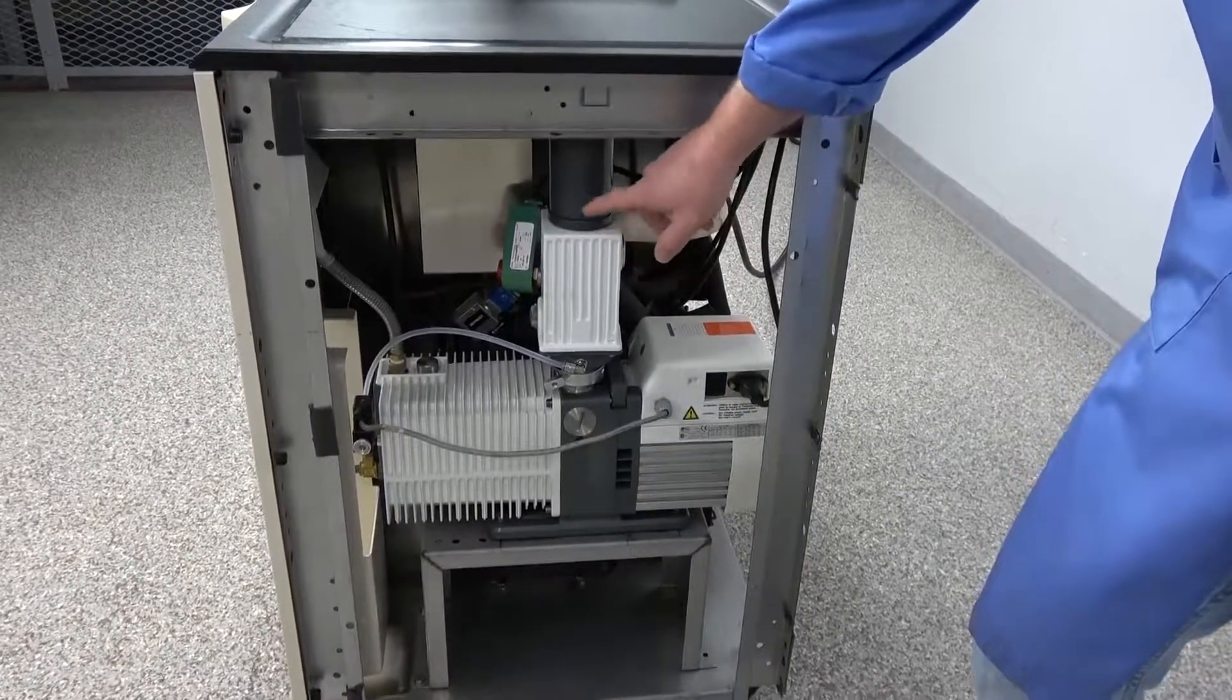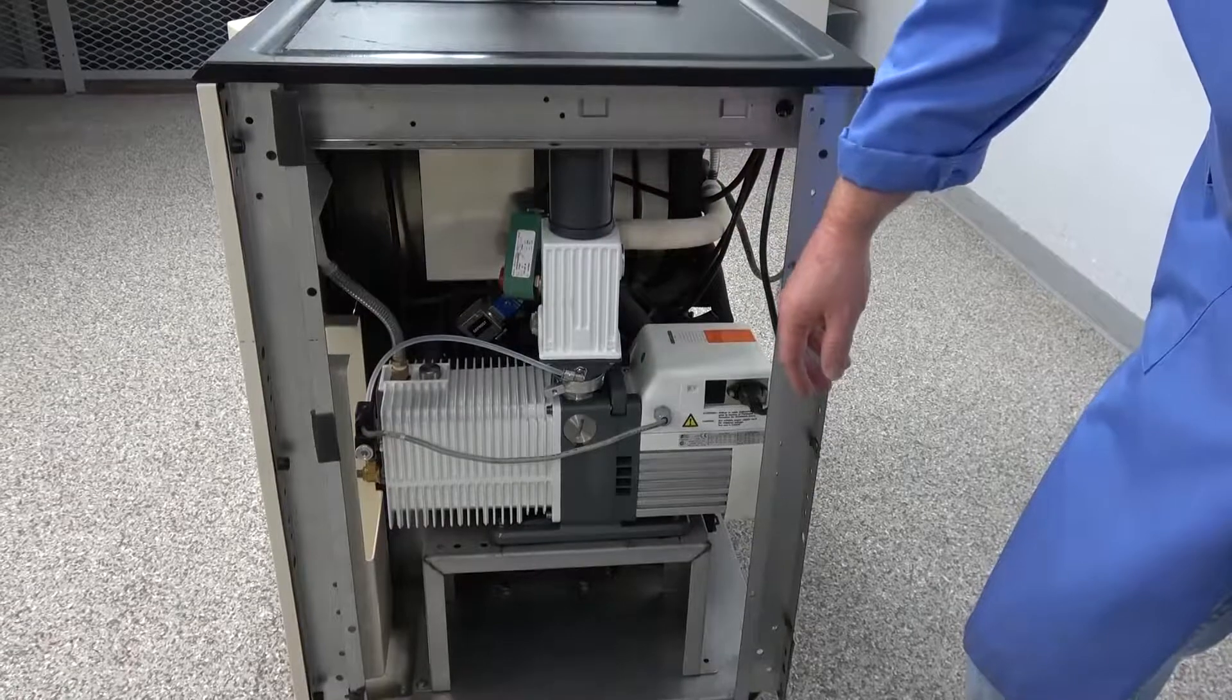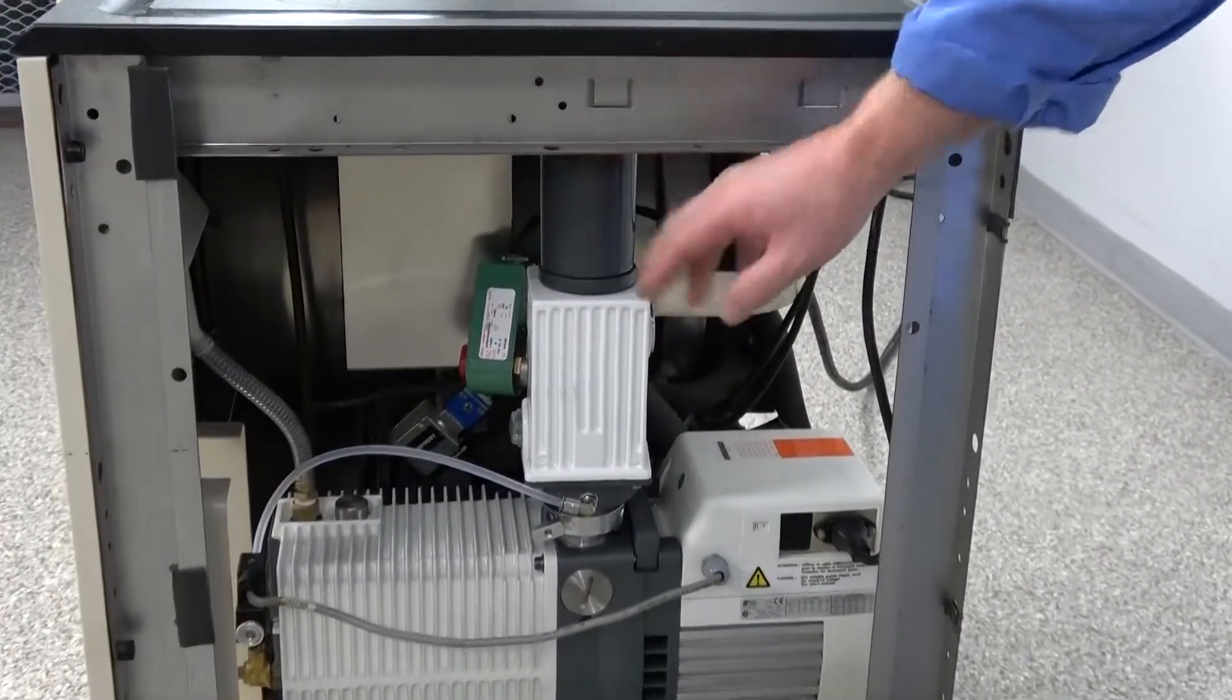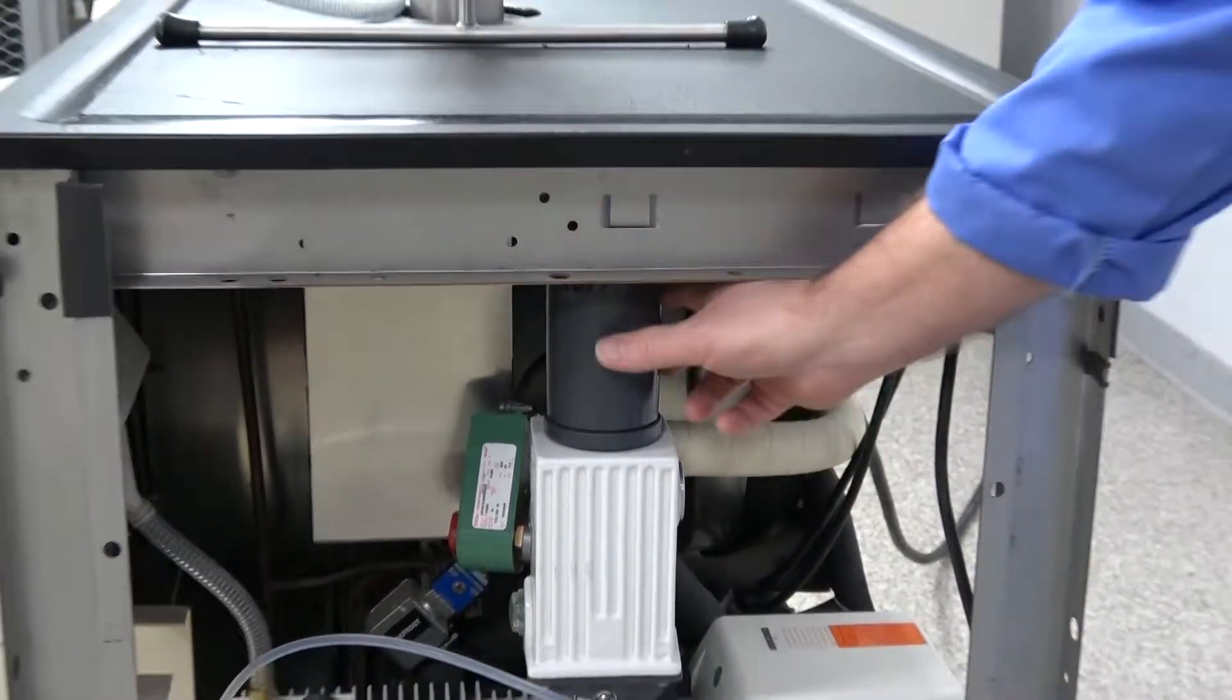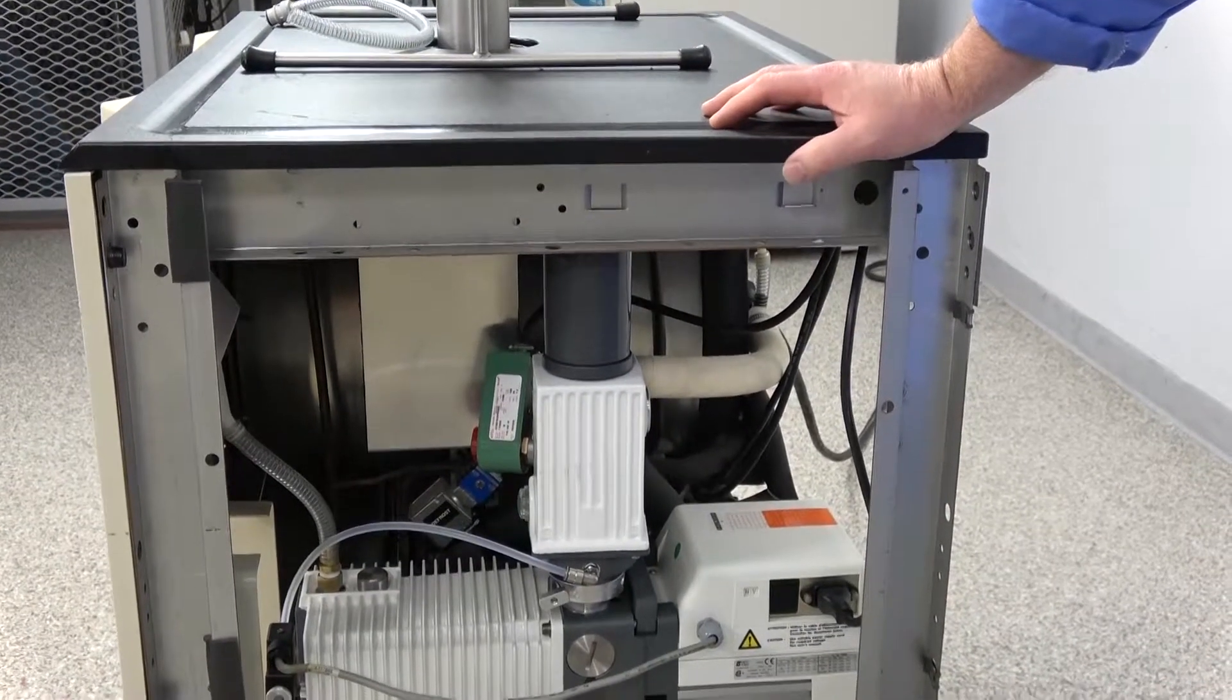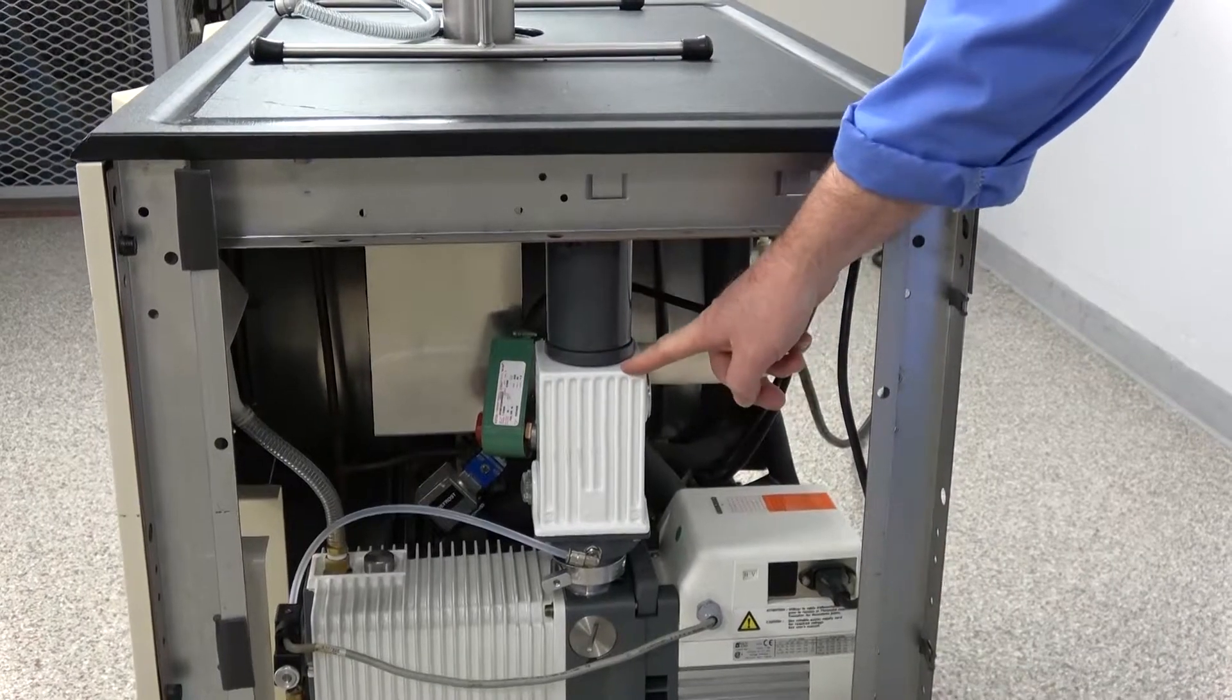And then the next thing I want to point out is what we add is a carbon filter. So this is actually a two-stage filtering system. You got your oil mist collector here and then also a carbon filter and it actually comes all the way up here. It's quite long so that you're filtering out any kind of fumes that might get into your lab. So that's something, again, that we've added.